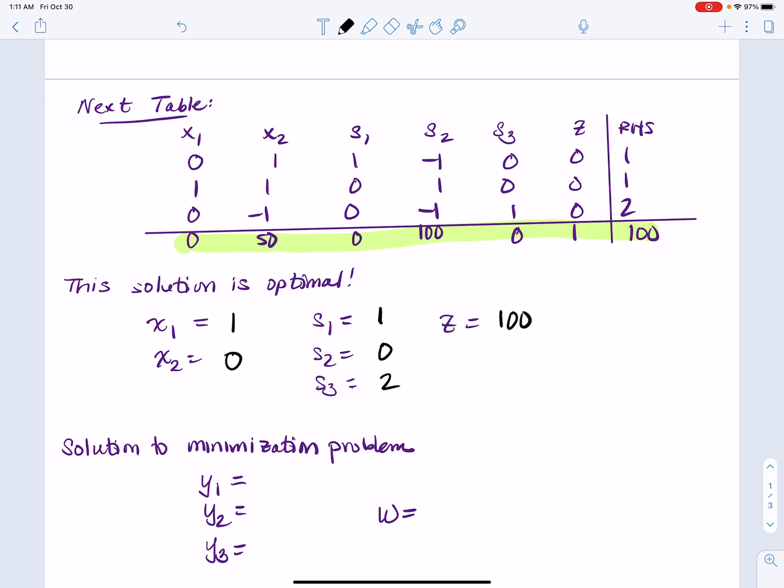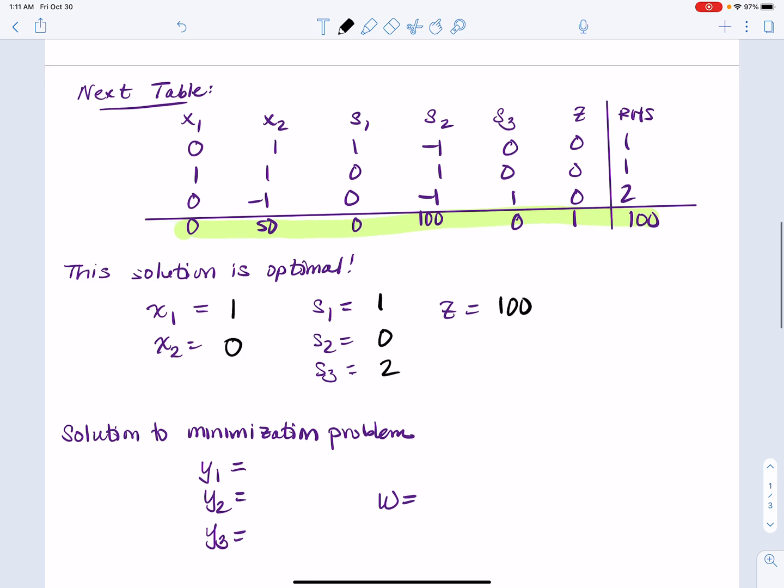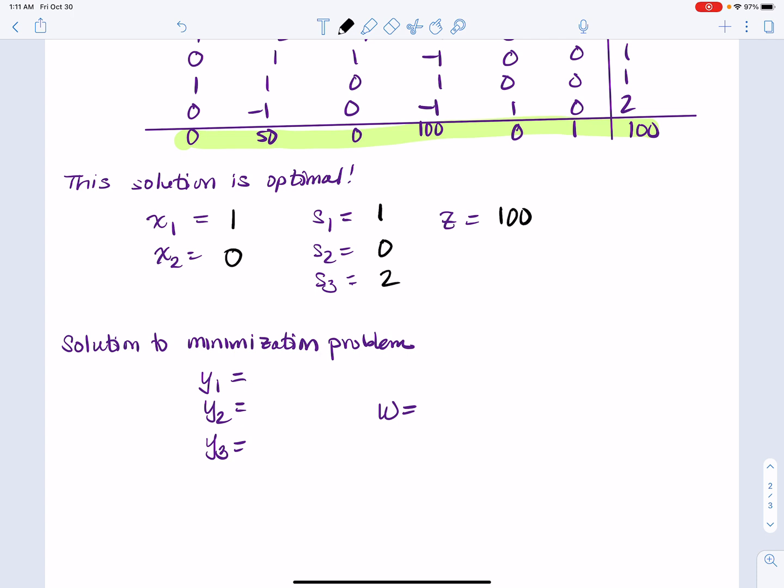Well this is good news because now what we know is that the maximum value of z is the minimum value of w in the dual problem. So that means that the minimum value of w is 100.